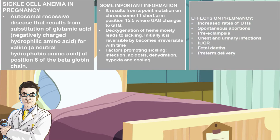The effects of sickle cell on pregnancy include an increased rate in urinary tract infections, spontaneous abortions, pre-eclampsia, chest and urinary infections, intrauterine growth restriction, fetal deaths, as well as pre-term delivery.